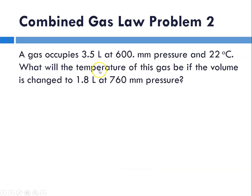Problem two, a gas occupies 3.5 liters at 600 millimeters pressure and 22 degrees C. What will the temperature be if the volume is changed to 1.8 liters at 760 millimeters pressure? Identifying variables. 600 millimeters for P1, 760 for P2. V1 is 3.5. V2 is 1.8. T1 is going to be 295 Kelvin. We're solving for T2.